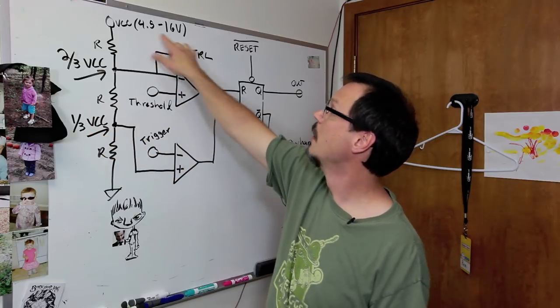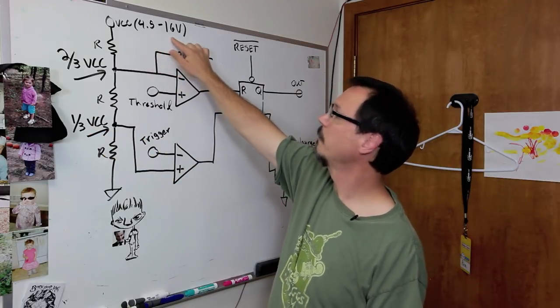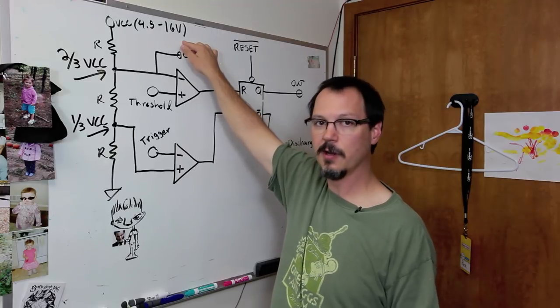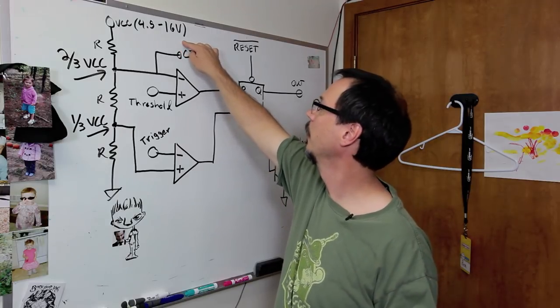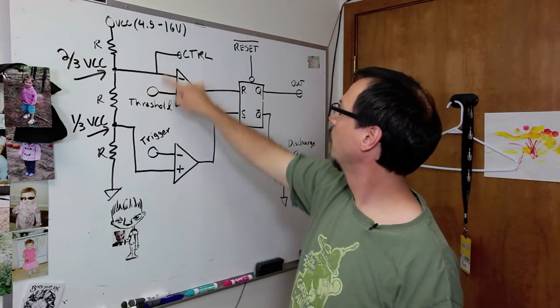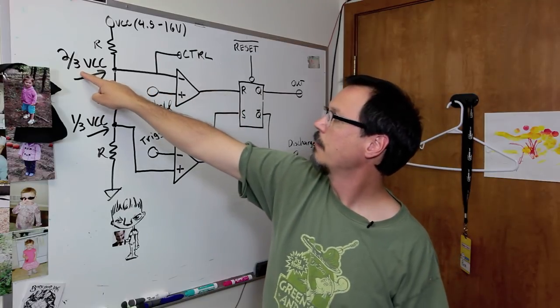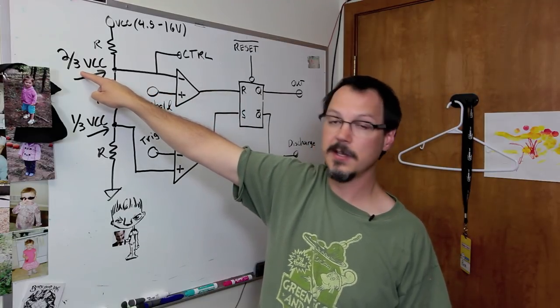And each of these is set at a reference. This comparator is set at a reference of 1/3 VCC. So your supply voltage. And the supply voltage can be between 4.5 and 16 volts for the part that we sell. It's a TI part. You can find it in our catalog. And the upper comparator is set to a reference voltage of 2/3 VCC.